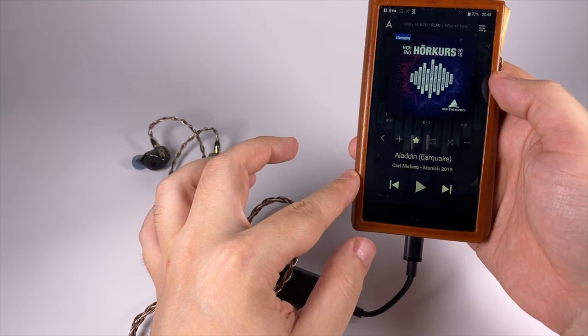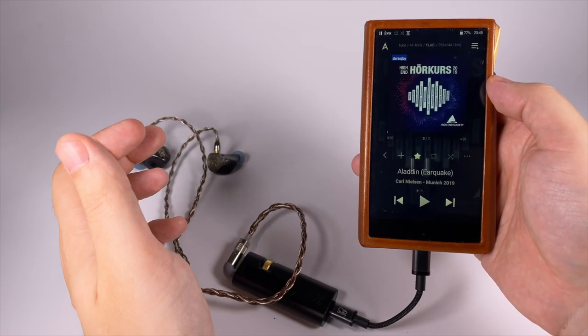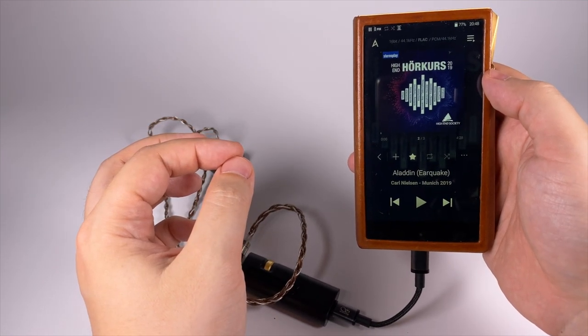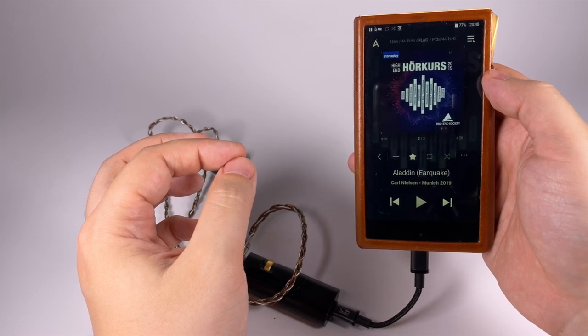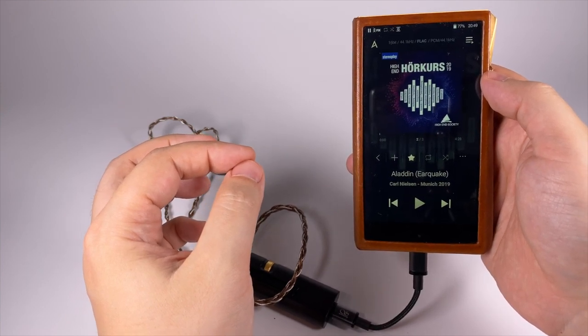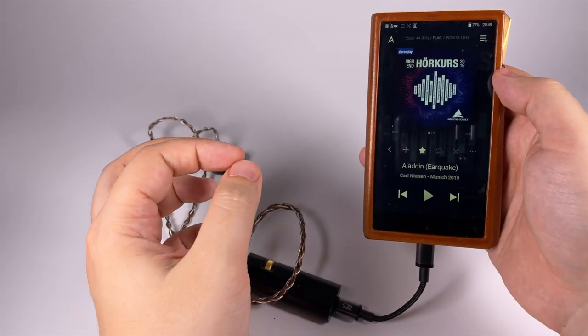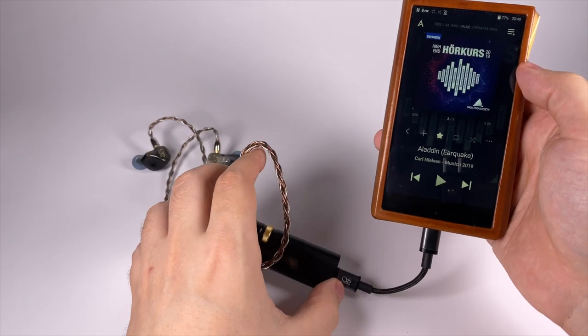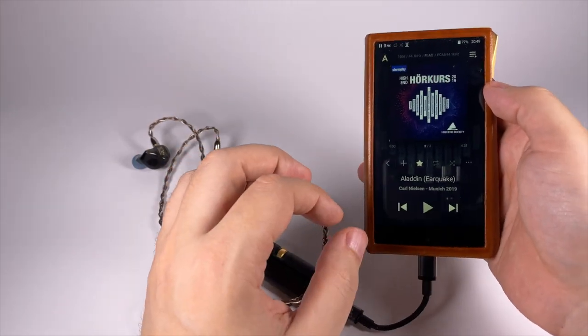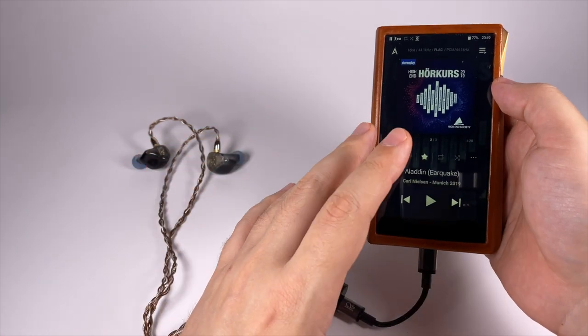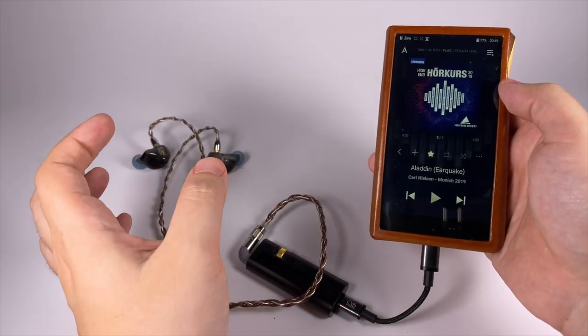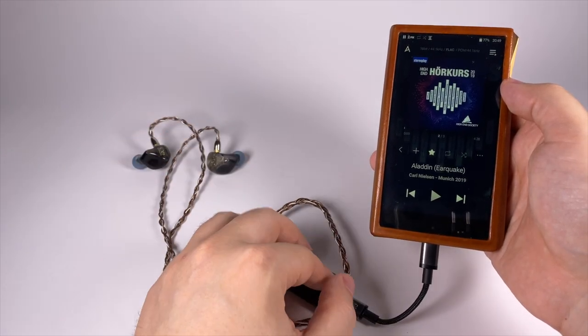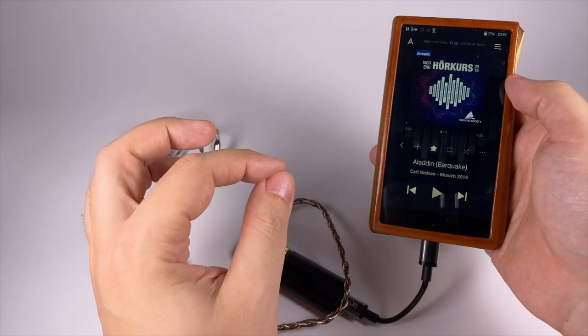As an example, Aladdin by Carl Nielsen—a classical example of great orchestral track. It's from the 2019 Munich sampler from the Munich High End, and it's really well-recorded orchestral track. It requires good resolution that this digital-to-analog converter delivers. Of course, typically for such music, it's better to use something more natural to achieve an even bigger stage, but still, amount of staging and positioning here is pretty okay.